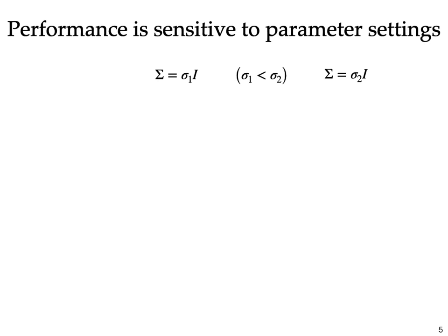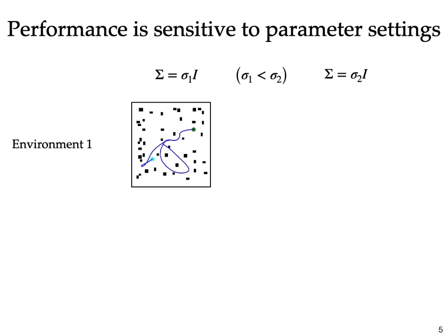Now consider the first type of environment, a forest of obstacles. Here starting from a straight-line initialization, a smaller sigma is unable to squeeze in between the obstacles as it tries to push the trajectory as far away from them as possible. However, a larger sigma is able to skirt along the obstacles and find a feasible trajectory.